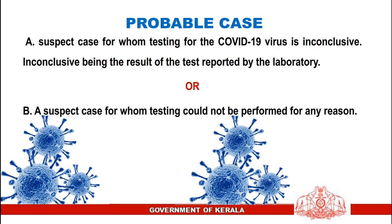Probable case: a suspect case for whom testing for the COVID-19 virus is inconclusive — inconclusive being the result of the test reported by the laboratory — or a suspect case for whom testing could not be performed for any reason.